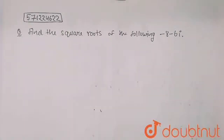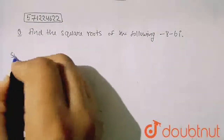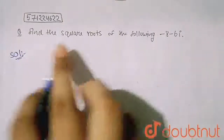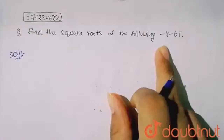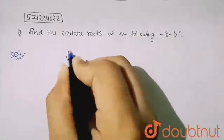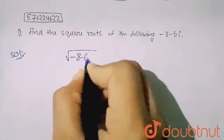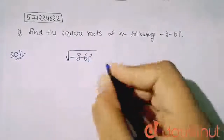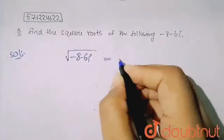Hello friends, so in this question it is given to me: find the square root of the following — minus 8 minus 6 iota. So I have to find the square root of minus 8 minus 6 iota.